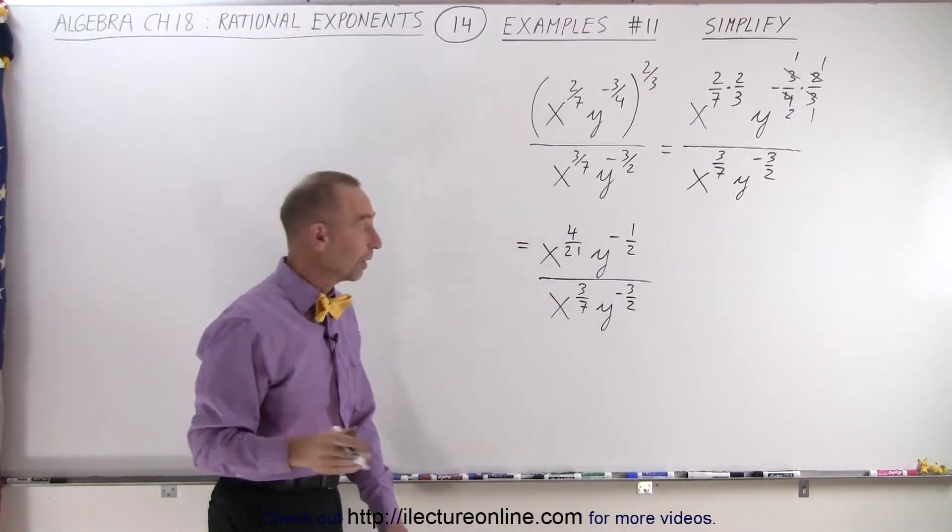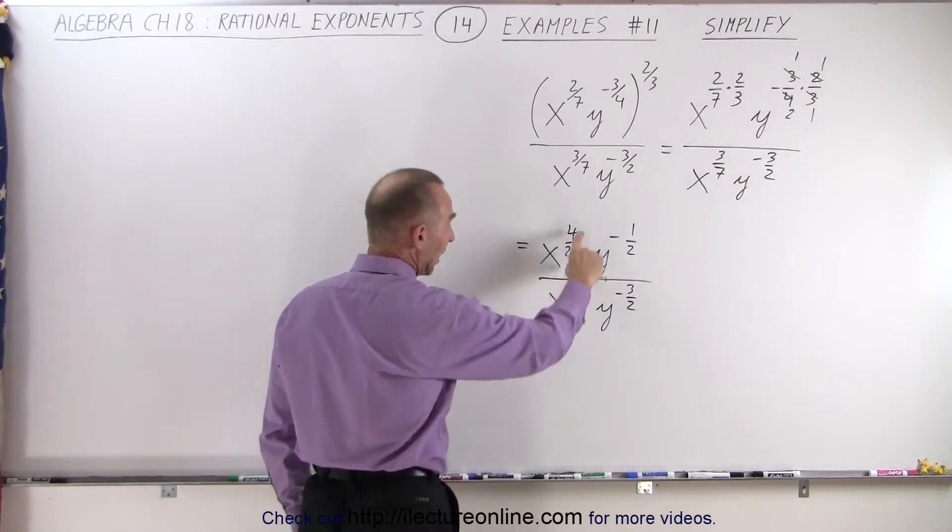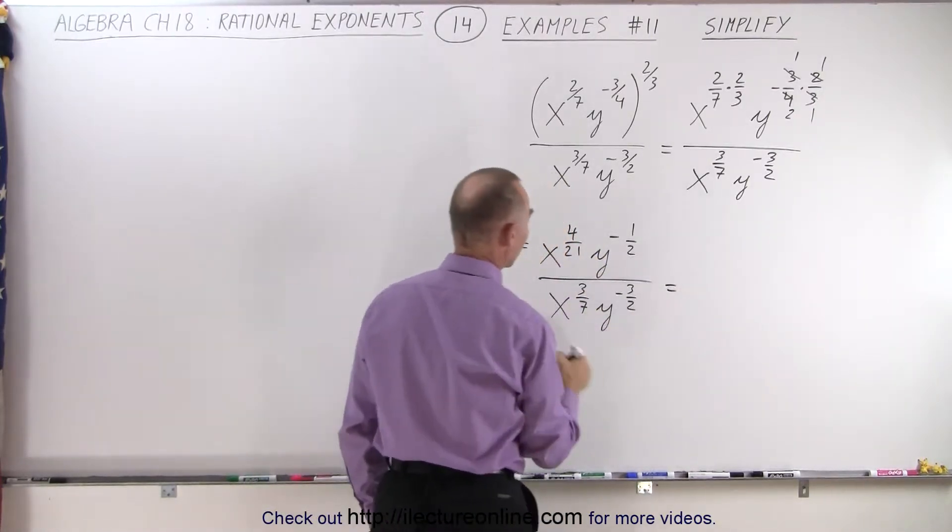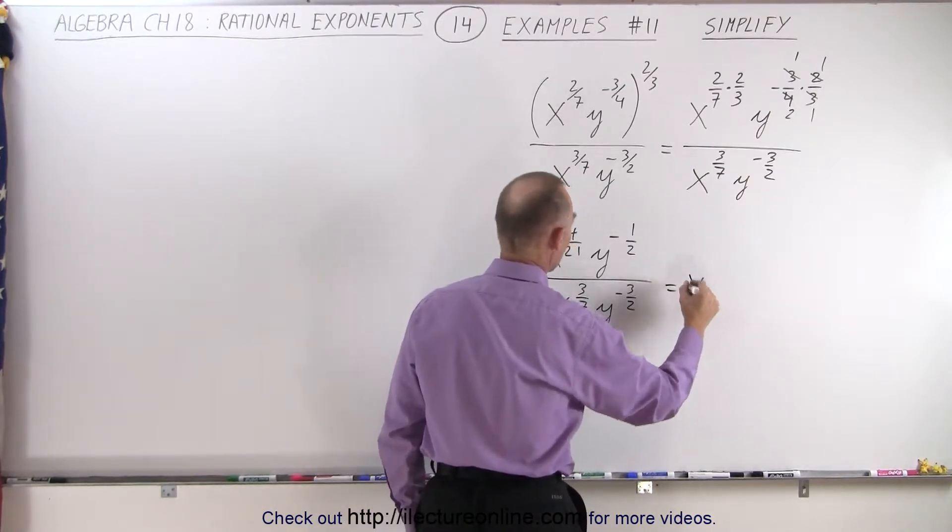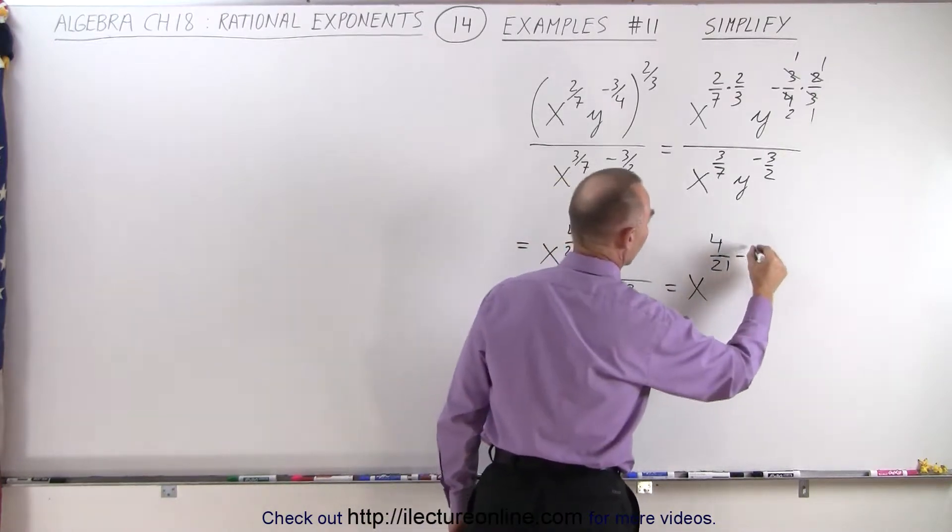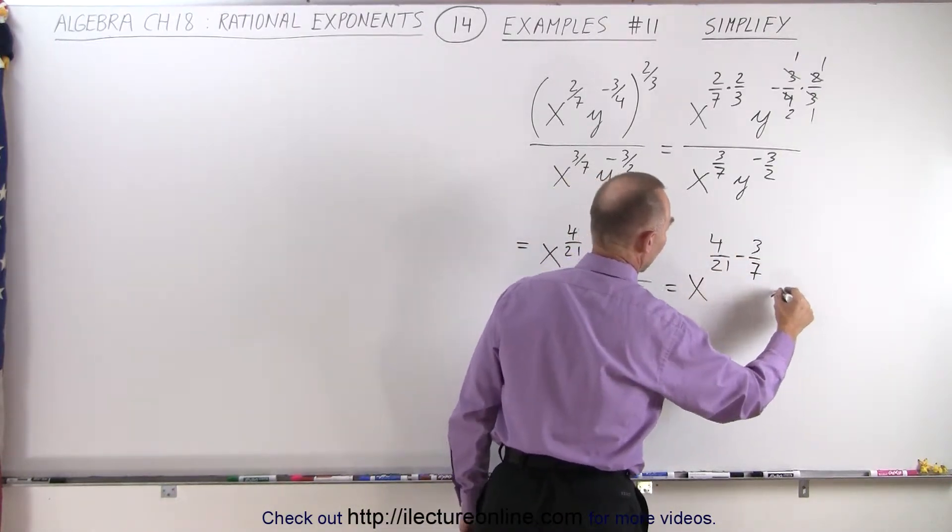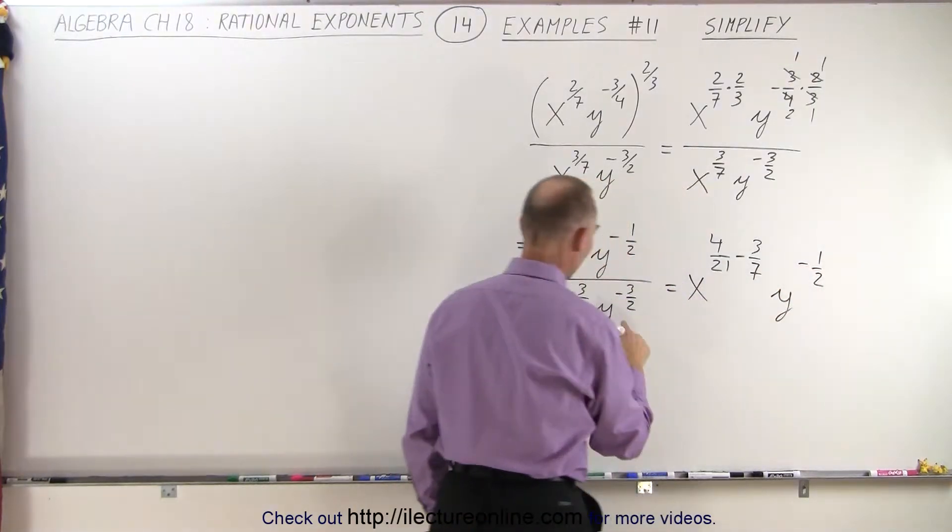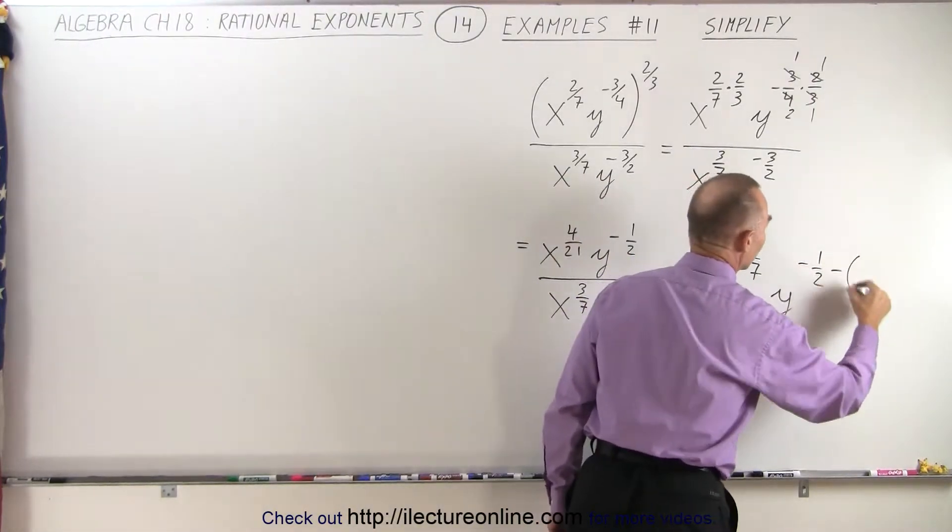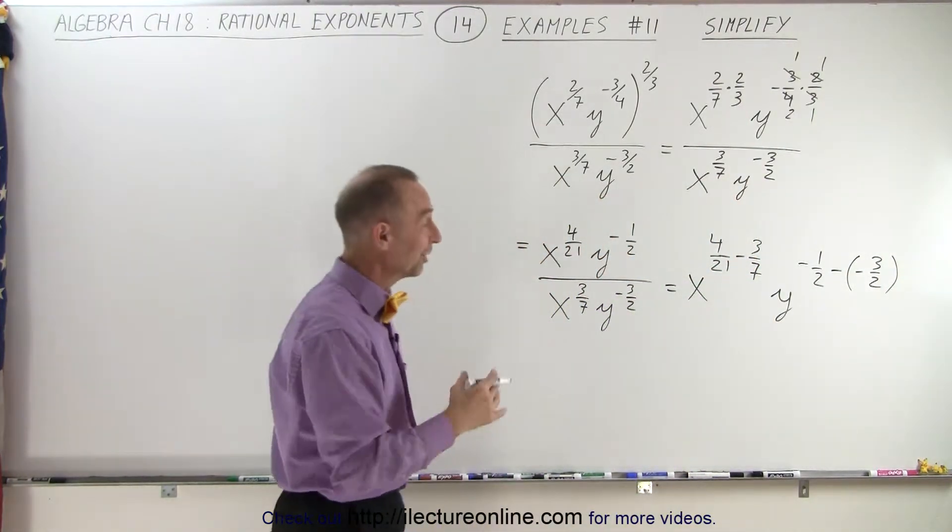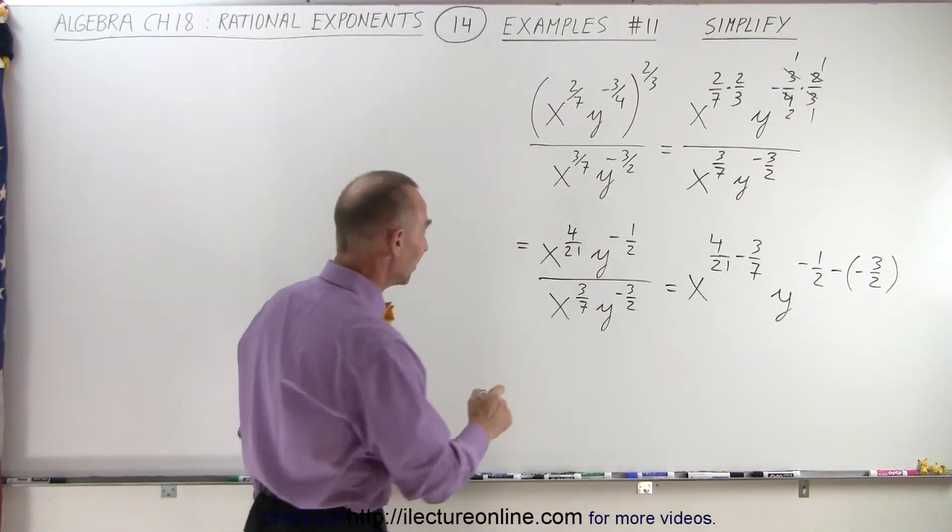Now we have the situation where we're dividing and we have exponents, so we're going to subtract exponents. So this can now be written as x to the 4 over 21 minus 3 over 7, and y minus 1 half, and then subtract the denominator, which is minus and minus 3 over 2. I should say subtract the exponent in the denominator. So now we simplify that.